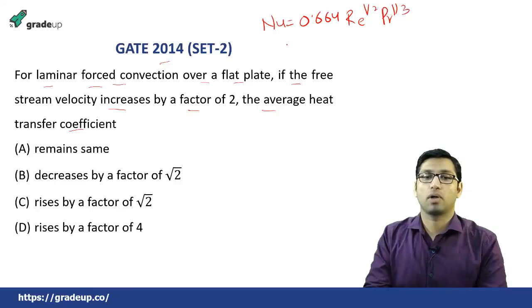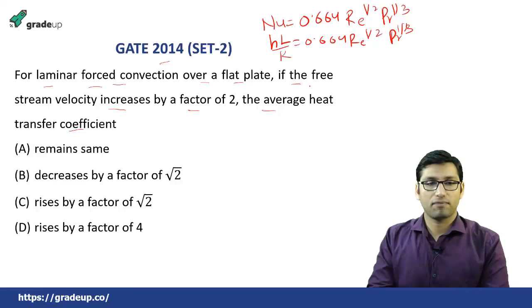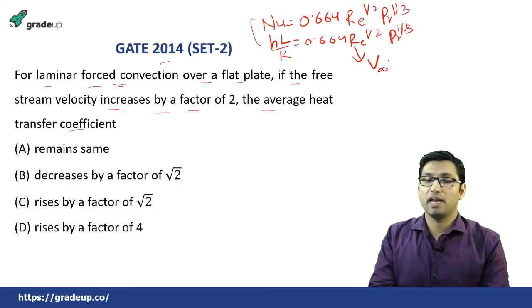This correlation for average Nusselt number is: Nu = hL/K = 0.664 × Re^(1/2) × Pr^(1/3). Now in this question, the free stream velocity increases by a factor of 2 and it is laminar forced convection over a flat plate, so we use this correlation. The Reynolds number equals V∞ × D / μ. So h is directly proportional to V∞ to the power half.